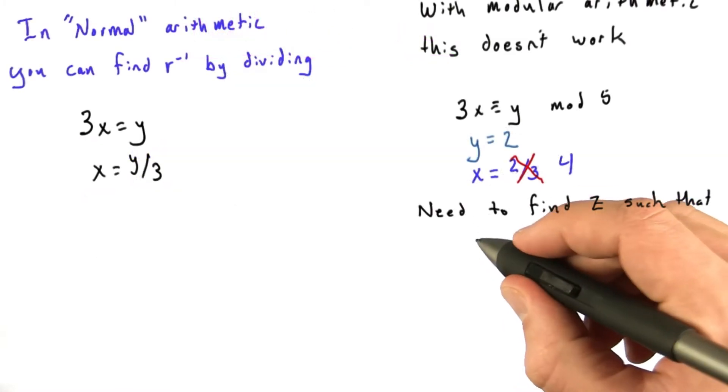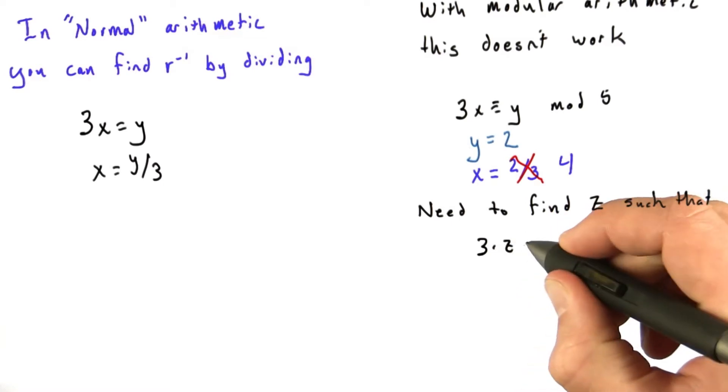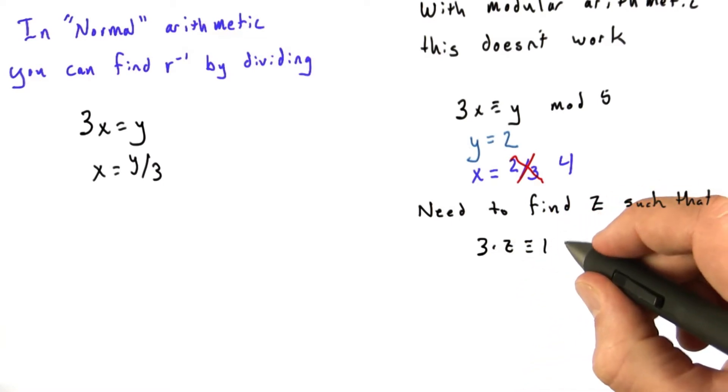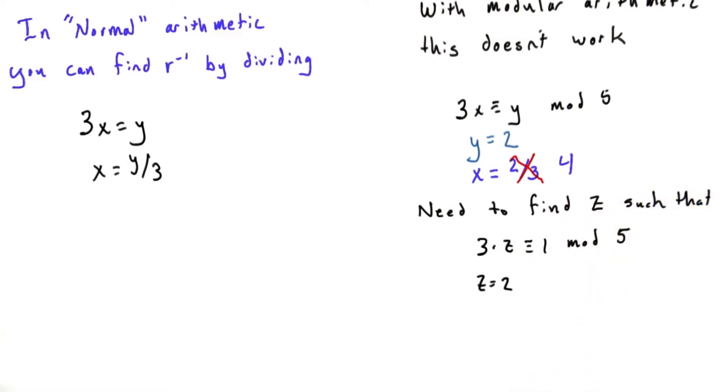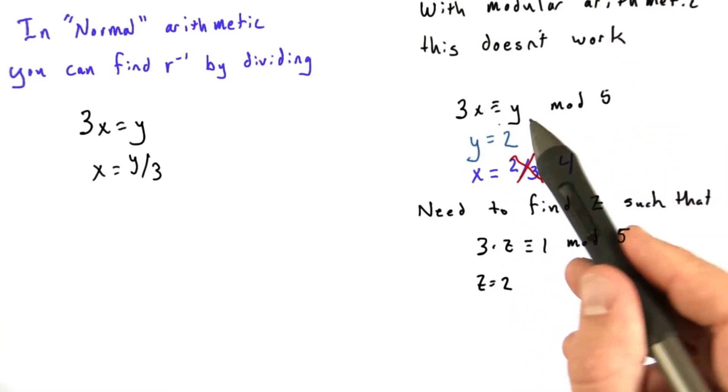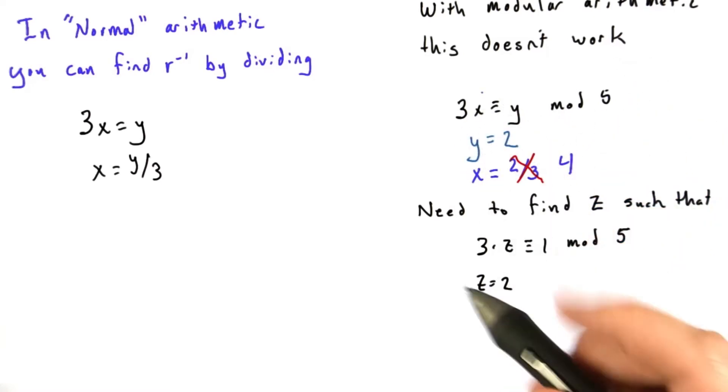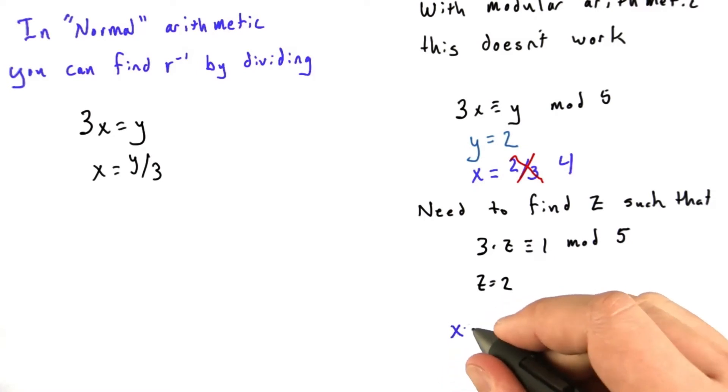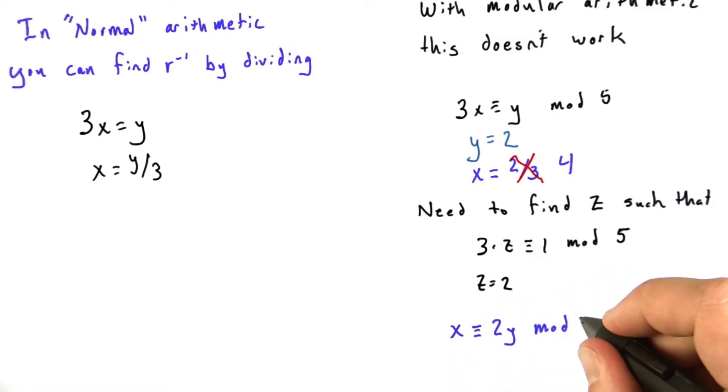So, what we need to find is some z such that 3 times z is congruent to 1 mod 5. It's fairly easy to see that z equals 2 accomplishes this. 3 times 2 is 6, and 6 is 1 mod 5. So, going back to our original problem, we can solve 3x is congruent to y mod 5 for x by writing x is congruent to 2y mod 5. So, if y equals 2, x is 2 times 2, which is 4.